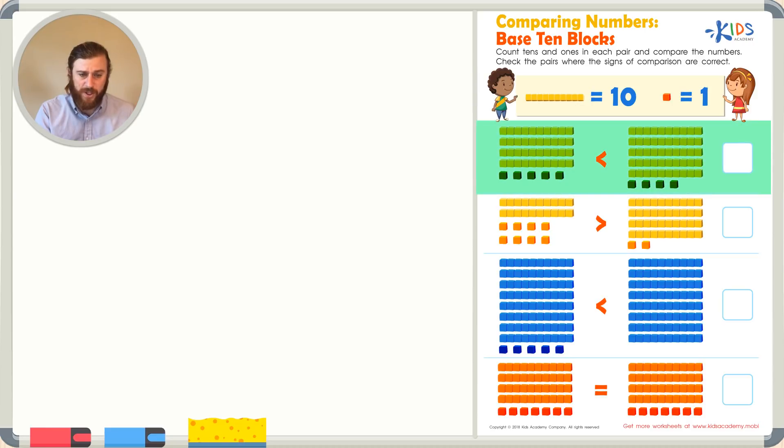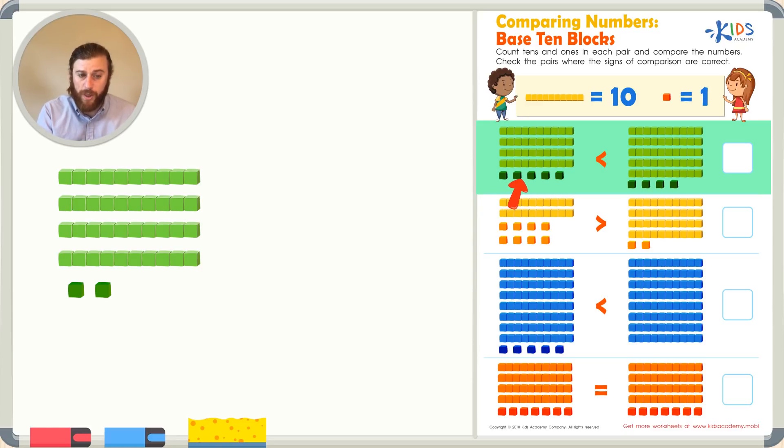So let's look at our first picture. How many longs are there? I see 1, 2, 3, 4 longs. I know that's worth 40. Now let's see how many cubes we have. There's 1, 2, 3, 4, 5 cubes. So let's count on from 40, 5 more: 41, 42, 43, 44, 45. Our first number has 45.